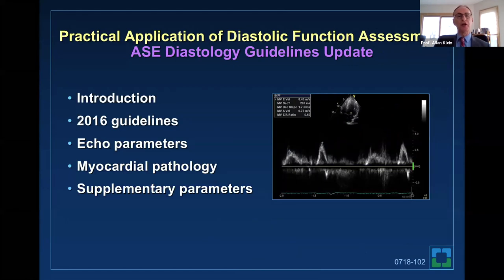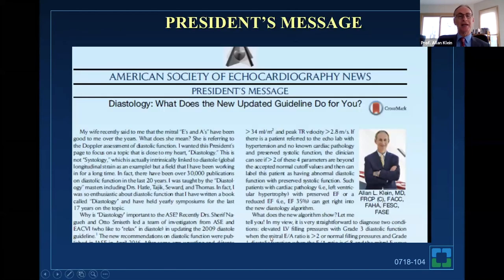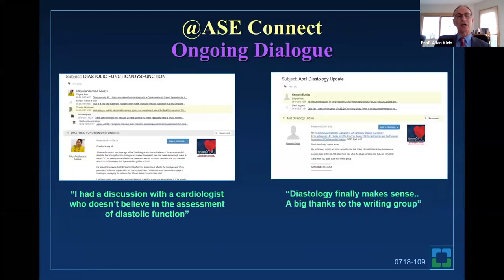I'd like to give a general introduction and talk about the guidelines—what ECHO parameters do you measure, what we mean by myocardial pathology, and the second algorithm and supplementary parameters. When I was president of the ASE, I wrote a president's page called diastology: what does the new updated guideline do for you? There's a lot of controversy in the U.S. about these guidelines. One person wrote on ASC Connect that a cardiologist doesn't believe in the assessment of diastolic function. In the same sitting, somebody also wrote 'diastology finally makes sense.' So very disparate comments.